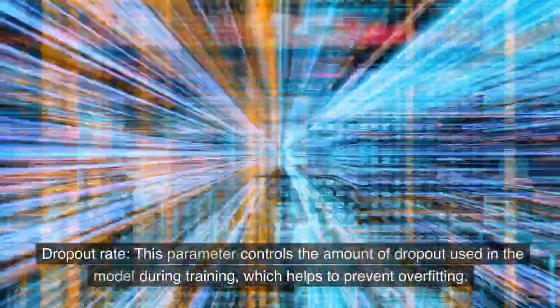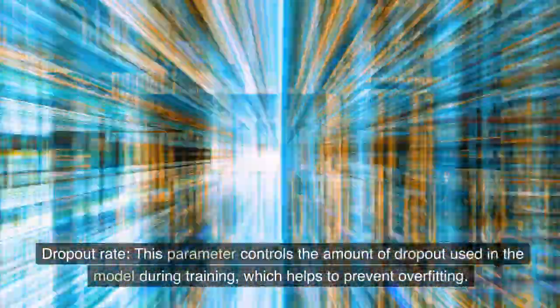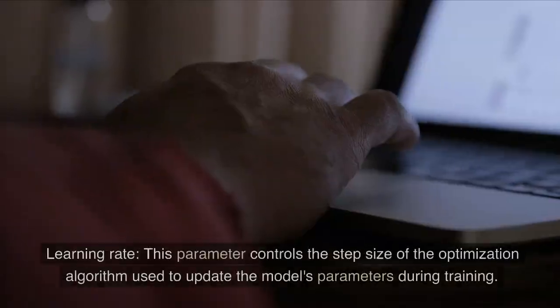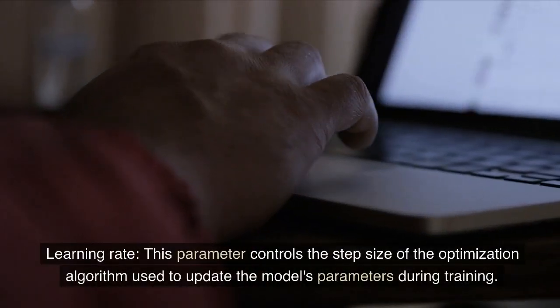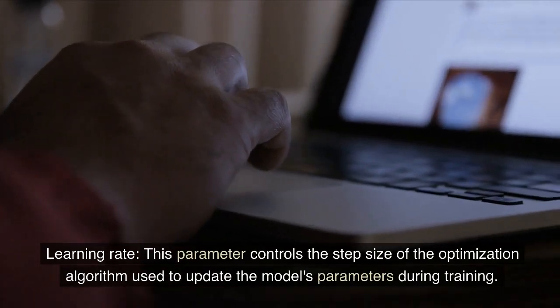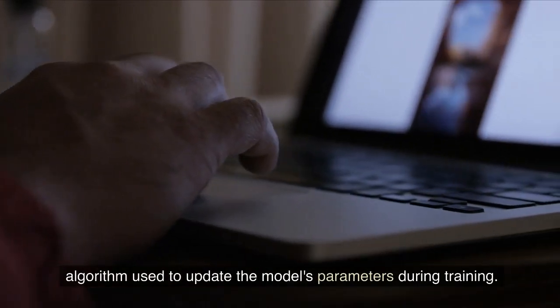Dropout rate: this parameter controls the amount of dropout used in the model during training, which helps to prevent overfitting. Learning rate: this parameter controls the step size of the optimization algorithm used to update the model's parameters during training.